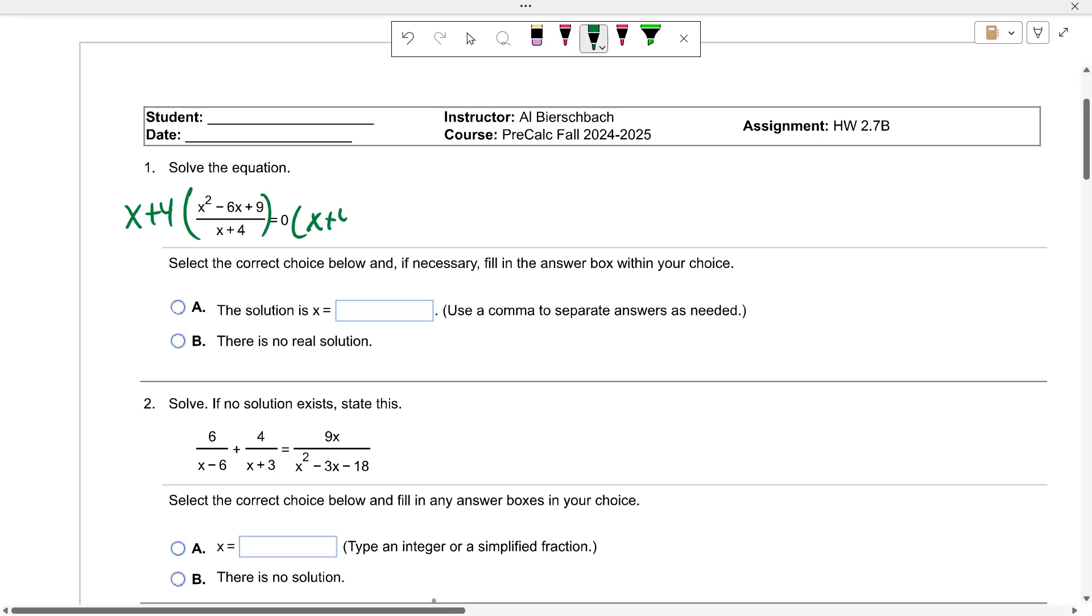We could factor the top but it's not going to cancel. Multiply both sides by x plus four. What's zero times x plus four? Zero. So basically you're just taking the numerator equal to zero. If we factor this, x times x minus three, x equals three. The solution is just x equals three.